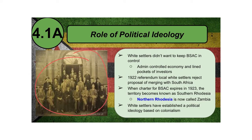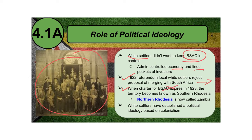With the continued arrival of white settlers into Zimbabwe — then called Rhodesia — the white settlers didn't want BSAC running the area, because BSAC controlled the economy and lined the pockets of investors, taking everything for themselves. In 1922, a referendum was held by the local white settlers, and they rejected a proposal to merge Zimbabwe with South Africa. The very next year, 1923, BSAC's charter expired and the territory became known as Southern Rhodesia.